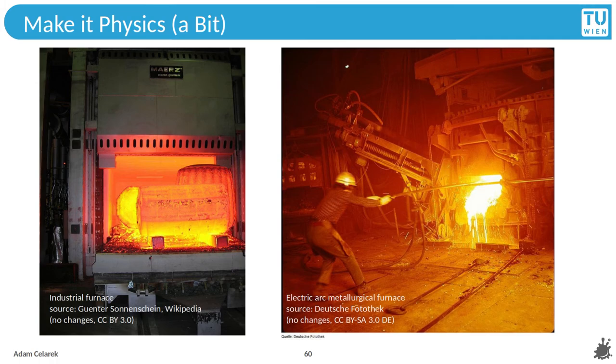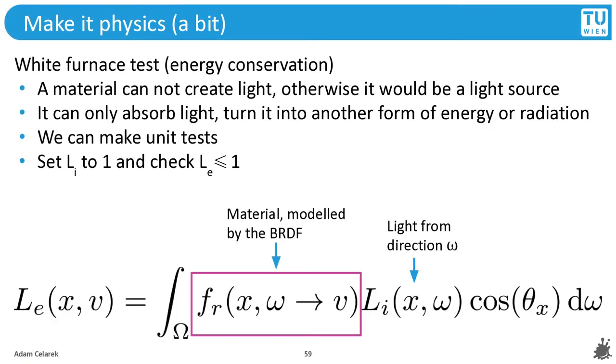For all non-native speakers, I want to explain the word furnace. Look at the pictures, it's an oven. Why do you have to know? Well, because there is the white furnace test for energy conservation. Think of an oven that is so hot it's all white. A material cannot create light, otherwise it would be a light source. This is pretty basic, but when you are implementing something, you can make errors. So this white furnace test can be used as a unit test. Basically it works as follows.